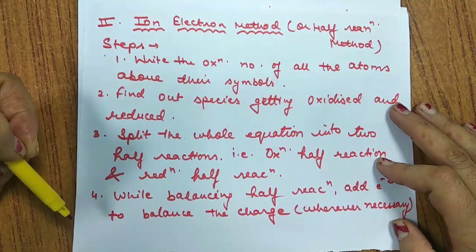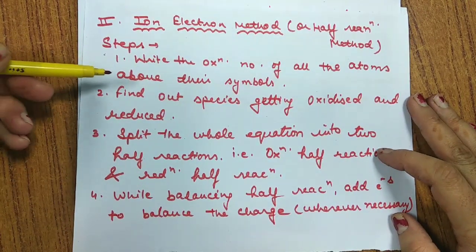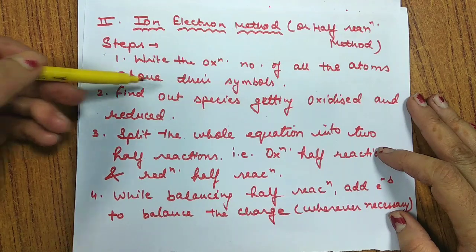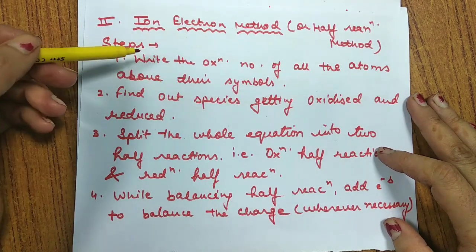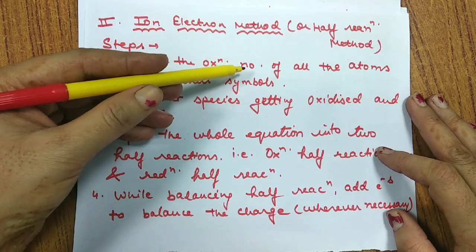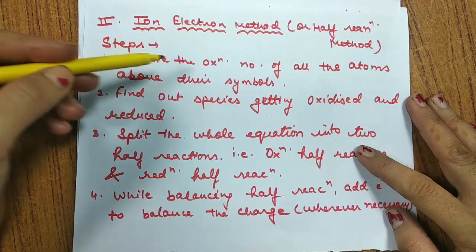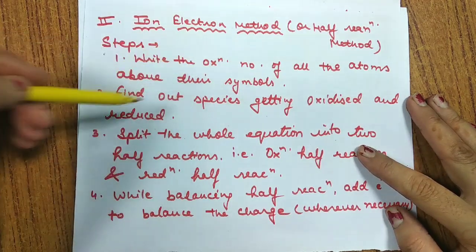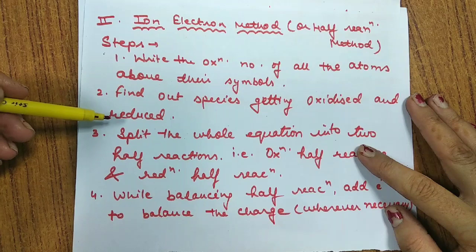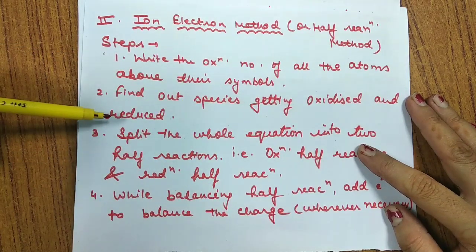First, we'll discuss all the steps we should follow while balancing the equation. The first step is to write the oxidation number of all the atoms above their symbol. After writing the skeletal equation, write the oxidation number of all atoms. The second step is to find which species undergo oxidation and which undergo reduction.